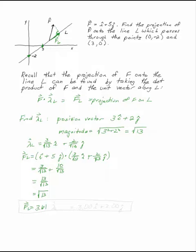To get it to be a vector, you have to multiply it again by that unit vector, which, as these numbers happen to work out, means that the square root of 13 will cancel and all you end up with is 3i plus 2j. That's the projection of F onto L.